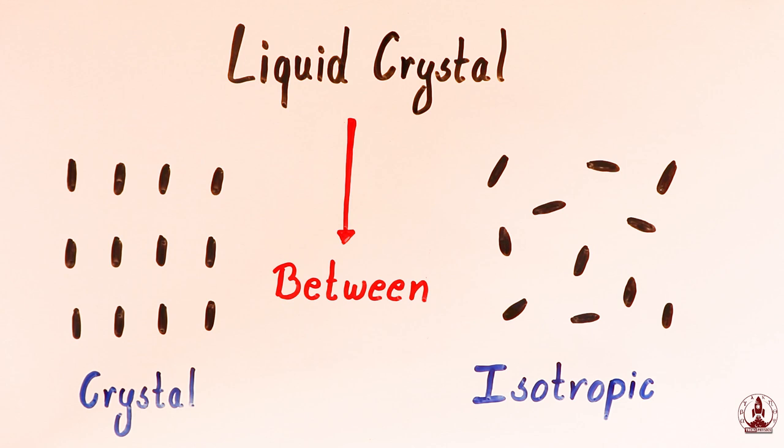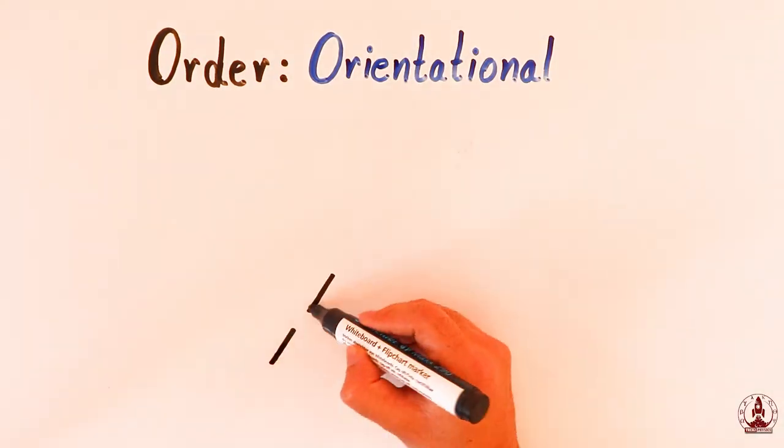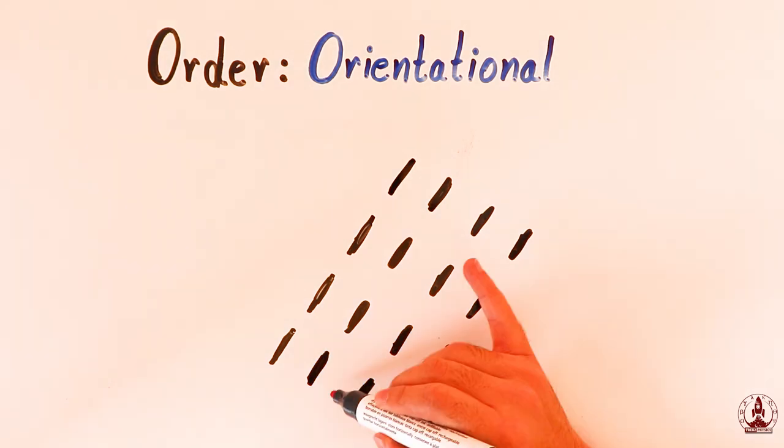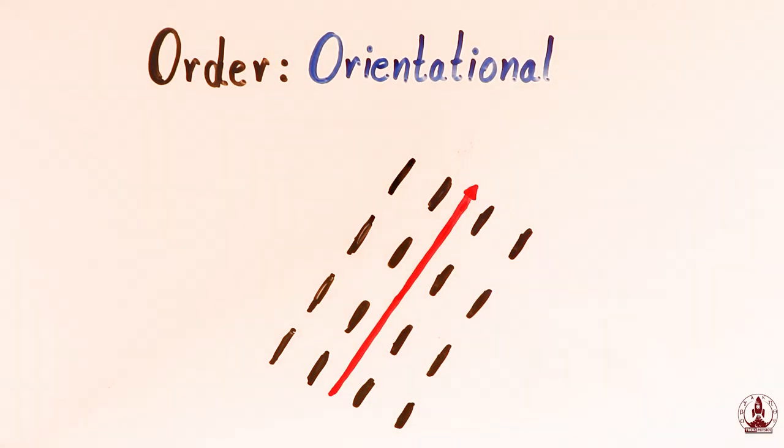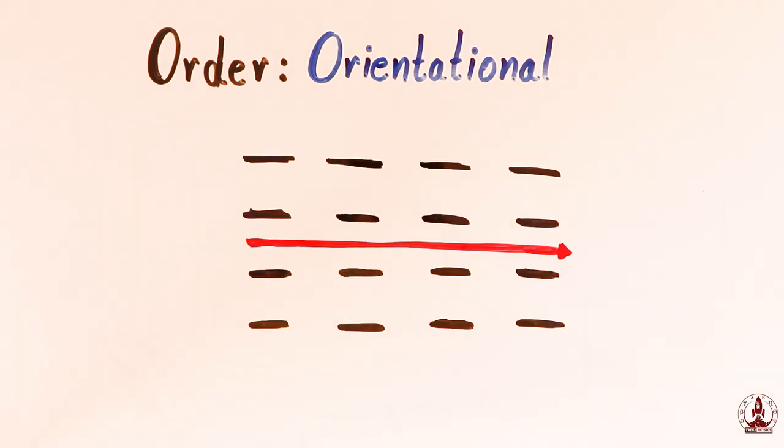To better understand liquid crystal we need to refresh our memory on the definition of order. First, orientational order. As the name refers, if the individual constituents of material on average orient to some particular direction, be it any direction, they have orientational order.